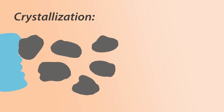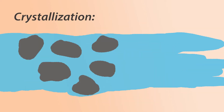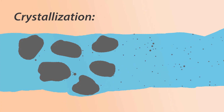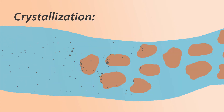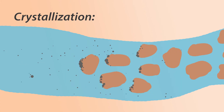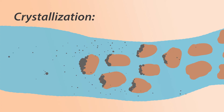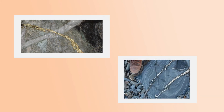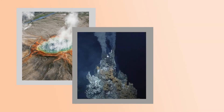Another way minerals can form is after hot water flows between rocks and dissolves particles. Then, when this water cools, these dissolved particles return to a solid state and can deposit or precipitate back out. This can lead to large sections of rocks coated in other minerals or even veins of minerals inside other rocks. This deposition can take place in hot springs or hydrothermal vents and veins.